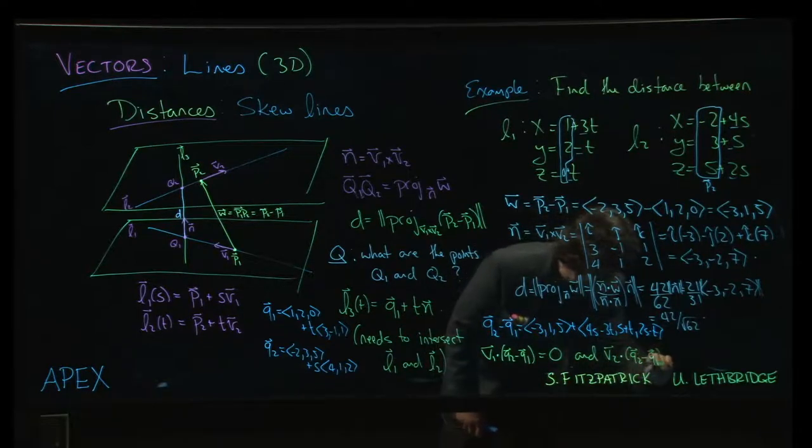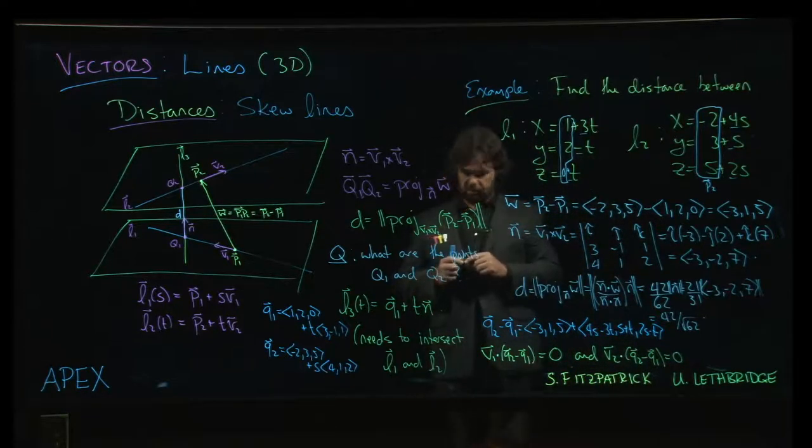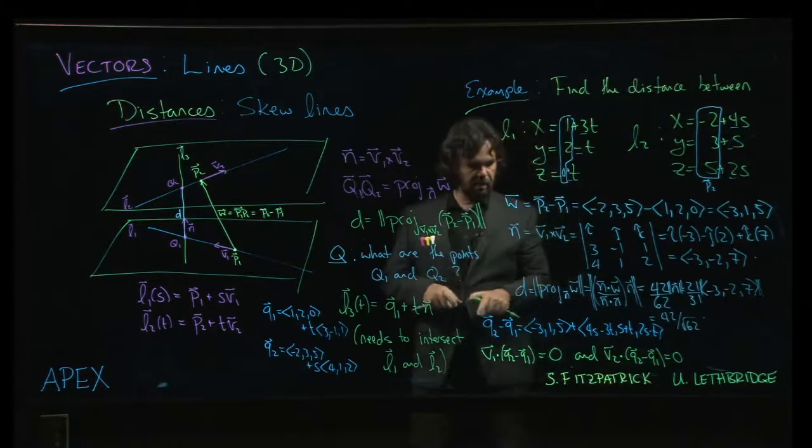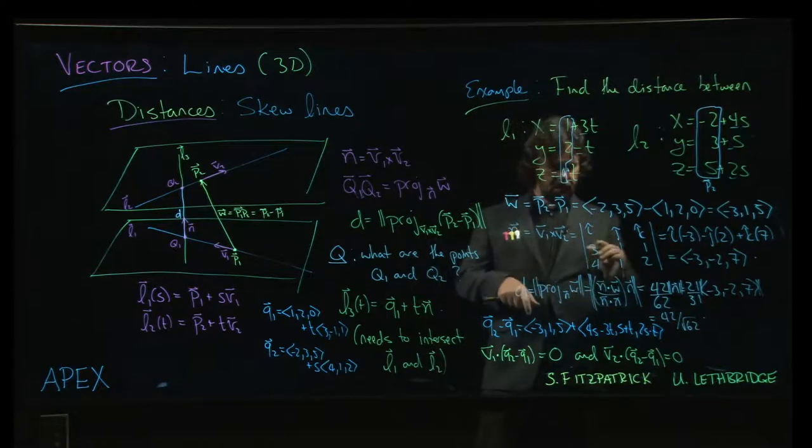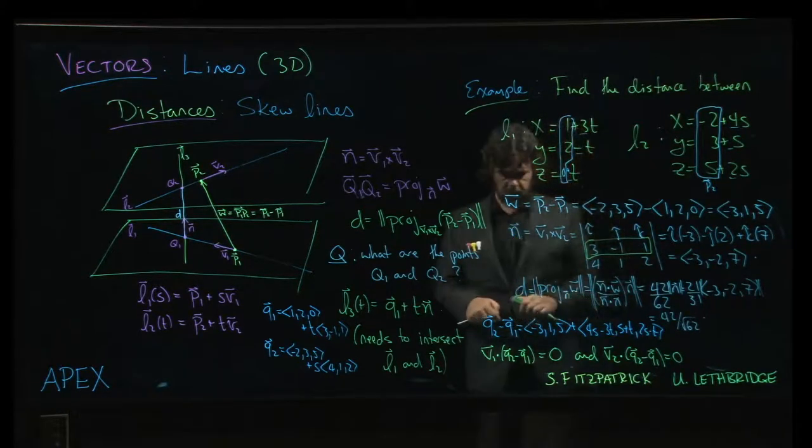Both those dot products would have to be equal to 0. I'm running out of board space here, but let's see if we can do it. So v1 is 3, minus 1, 1.